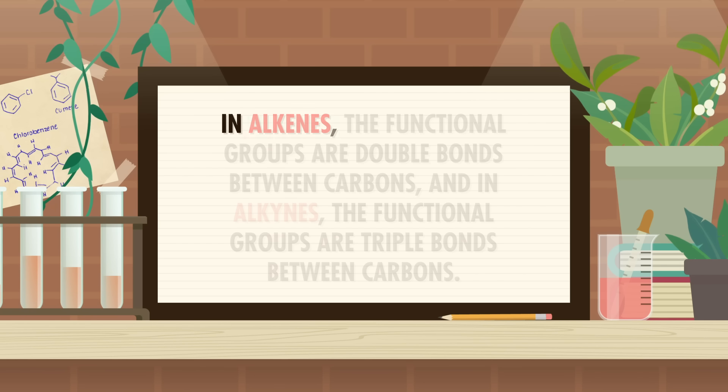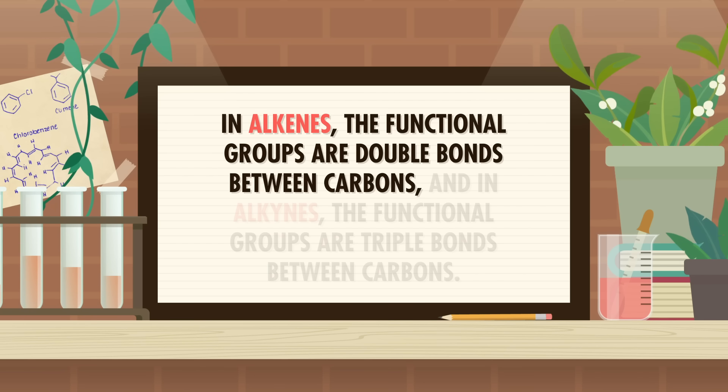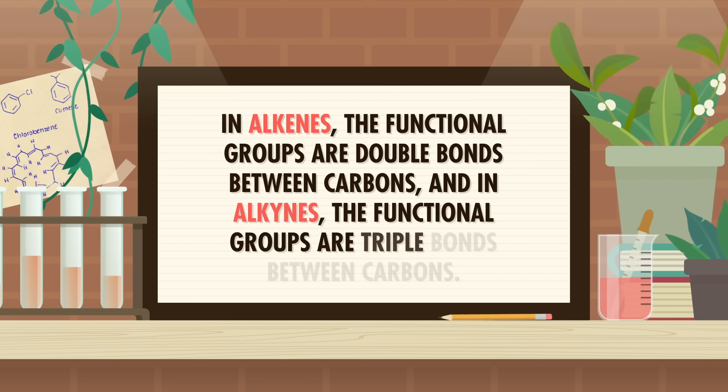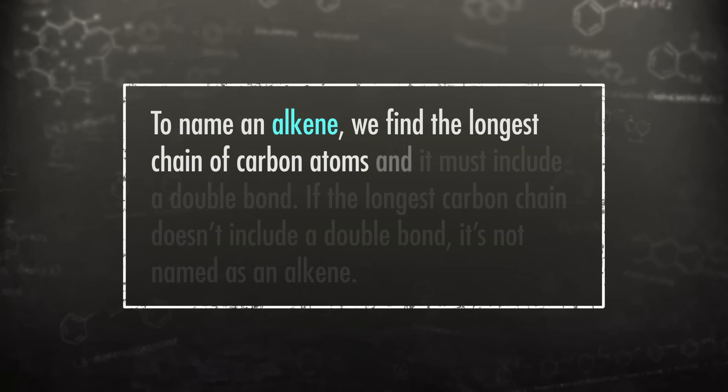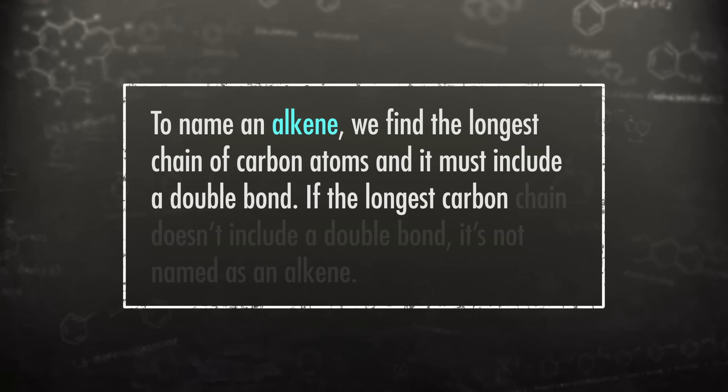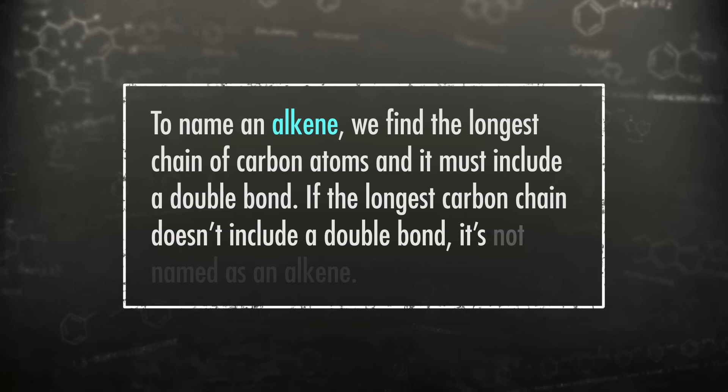On the other hand, alkenes and alkynes have functional groups. Remember last episode, we said that functional groups are where all the cool chemistry happens. In alkenes, the functional groups are double bonds between carbons. And in alkynes, the functional groups are triple bonds between carbons. Alkenes and alkynes can do fun reactions to make things like light-emitting polymers, which are big molecules with regions where electrons kind of move around on a racetrack that absorbs energy and emits light. To name an alkene, we find the longest chain of carbon atoms, and it must include a double bond. If the longest carbon chain doesn't include a double bond, it's not named as an alkene — IUPAC makes the rules.